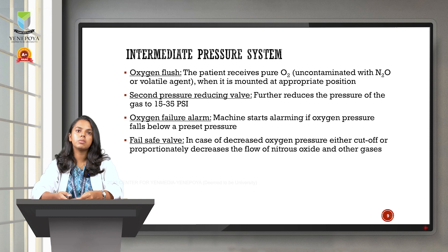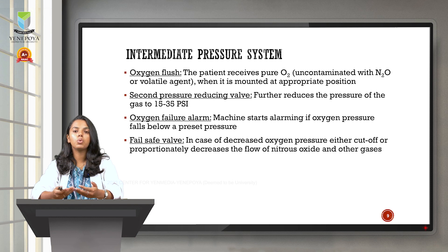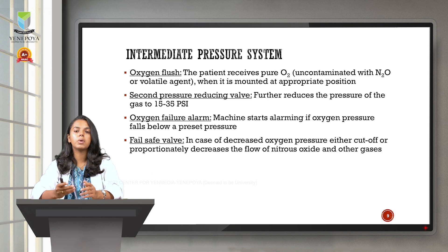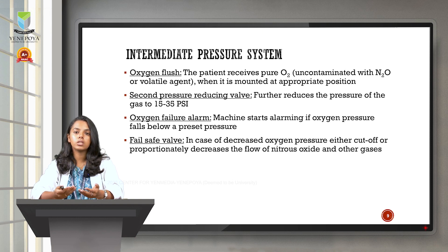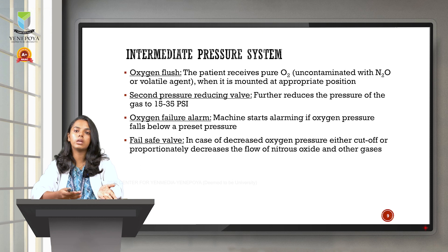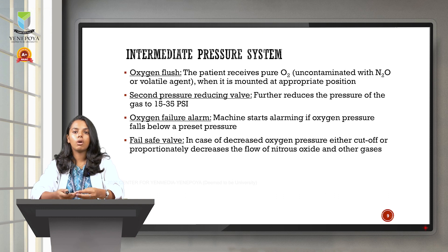The third component of the intermediate pressure system is the oxygen failure alarm, which starts beeping when the oxygen pressure inside the machine falls below a preset level. The fourth component is the fail-safe valve — in cases of decreased oxygen pressure, the fail-safe valve either cuts off or reduces the pressure of other gases inside the machine, so that we do not administer a toxic hypoxic mixture of gases to the patient.